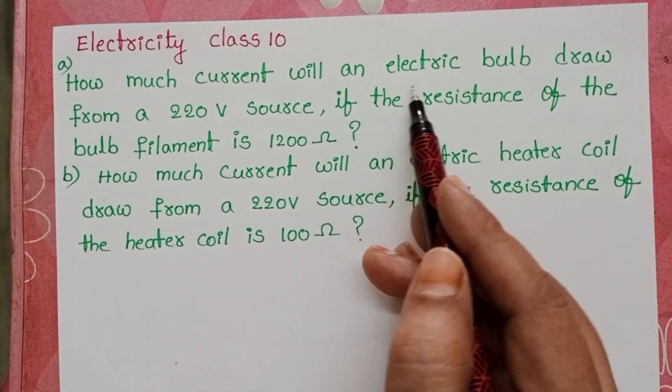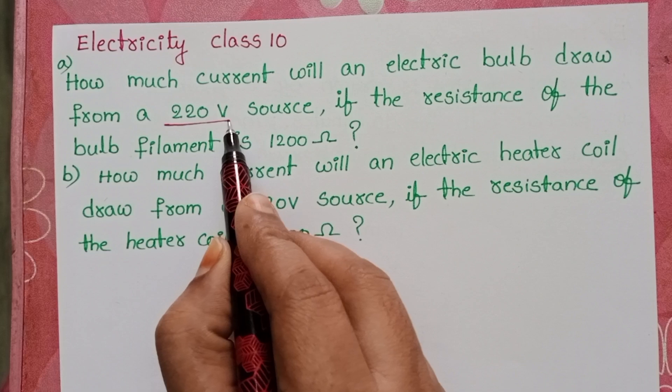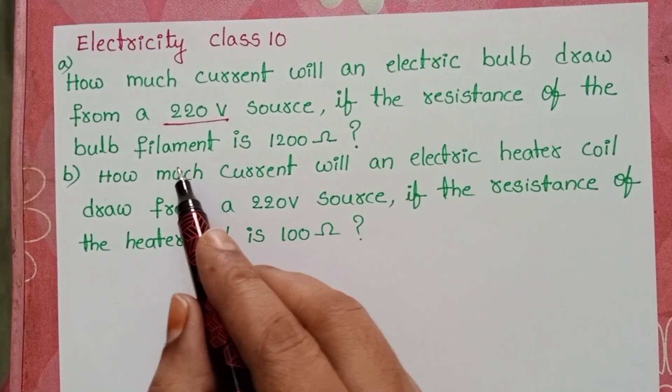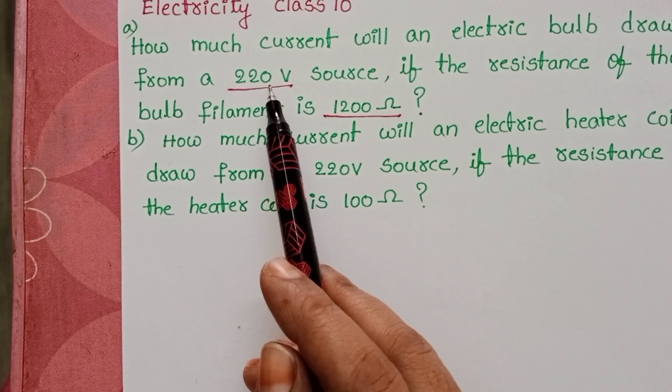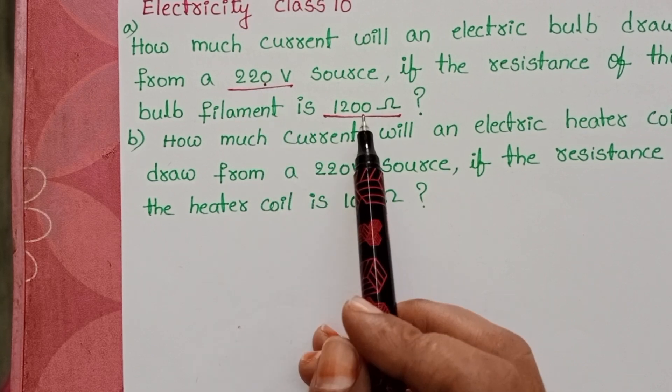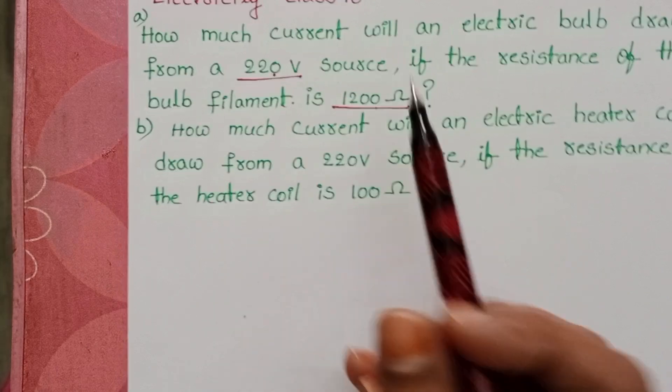How much current will an electric bulb draw from a 220 volt source if the resistance of the bulb filament is 1200 ohms? In this question we know the potential difference and resistance of the filament. By using this we have to find out the electric current.